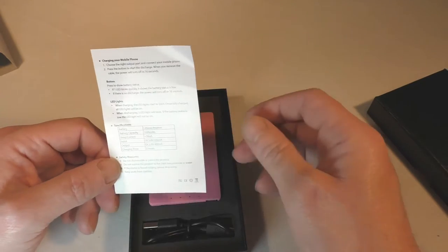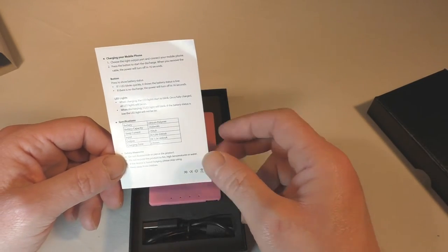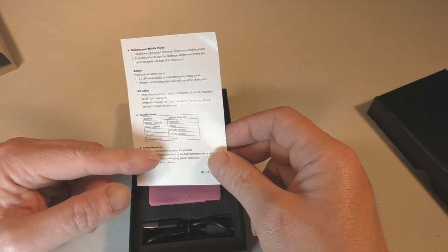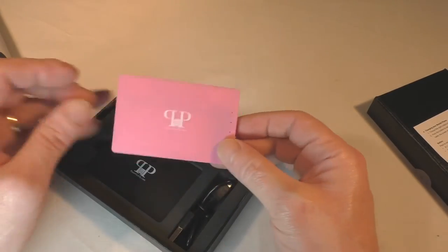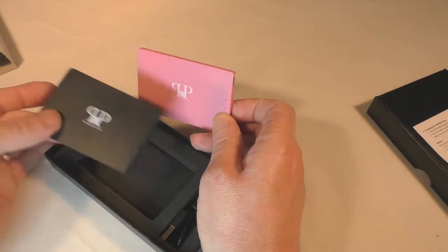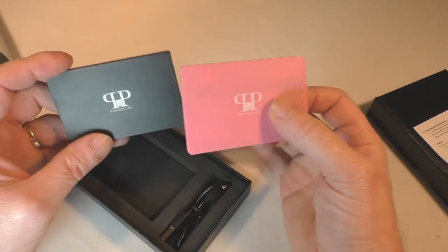It's a thousand and twenty milliamp hour, and it shows the DC current charging time, two hours, which is pretty much about right. We have a pink one and a black one and these are basically like credit card size, so these will fit in a wallet.